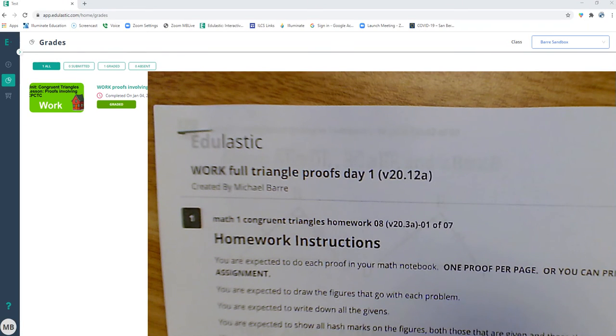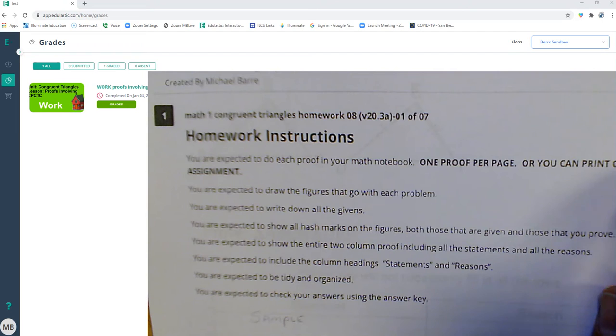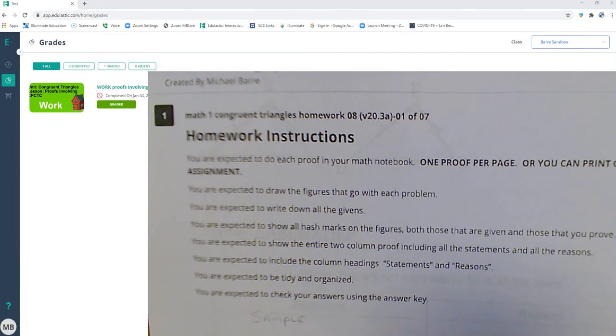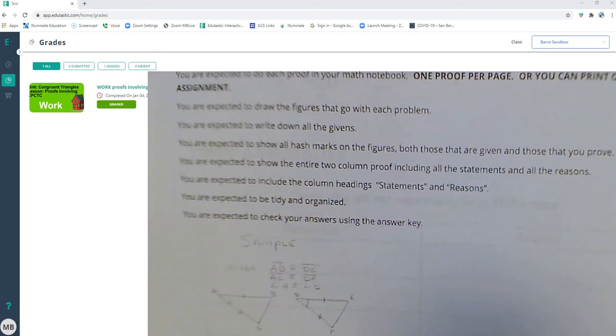All right, this is Mr. Barr and this is full triangle proofs day one. Remember, you're going to be expected to write this all down in your notebook, otherwise you need to print this out and then you can write it on this page. So draw the figures, write it down, mark up the document or the figures, show all the statements and reasons, be tidy and organized.